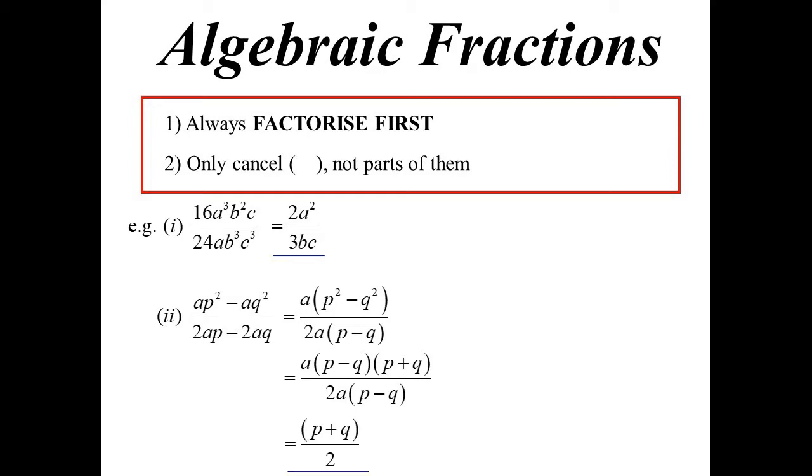Now we can see if there's cancelling. So the p minus q, the complete parentheses is exactly the same. That'll cancel. And the a will cancel as well, leaving this p plus q on two.